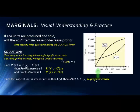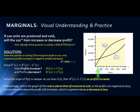Since R′(X) > C′(X), profits are increasing. This may seem confusing because the cost graph is above the revenue graph, meaning we're still at a loss. However, profits increasing while still negative means the loss is decreasing — we're getting closer to break-even. Think of it like being overdrawn $100 in your checking account and depositing $50: you still have a negative balance, but you're improving.